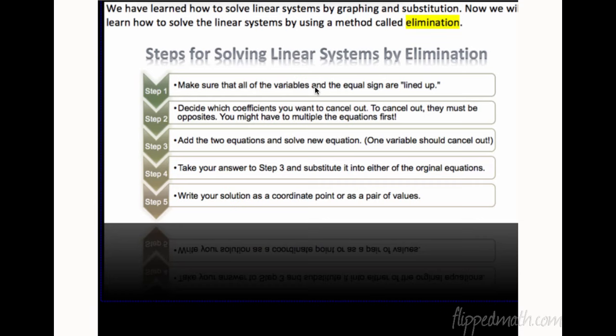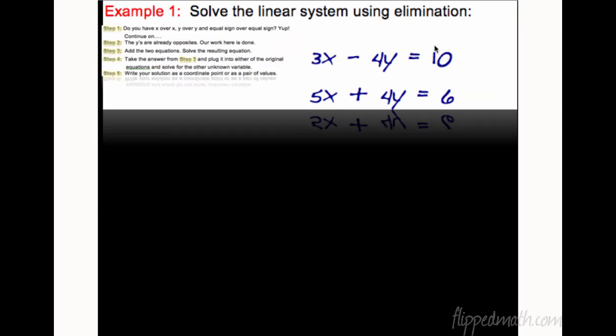We then add the two equations, and you'll see that a new equation is formed. You solve that, and then you take that and sub it back into the other equation to get the other variable, just like in substitution, and you write your solution as a coordinate point. That's a lot of information. It's probably easiest just to check it out with an example.